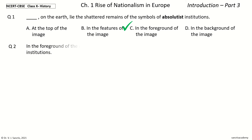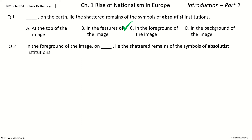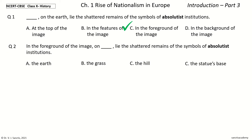Question two: In the foreground of the image, on ___ lie the shattered remains of the symbols of absolutist institutions. The options are: the earth, the grass, the hill, the statue's base. The answer is: the earth.